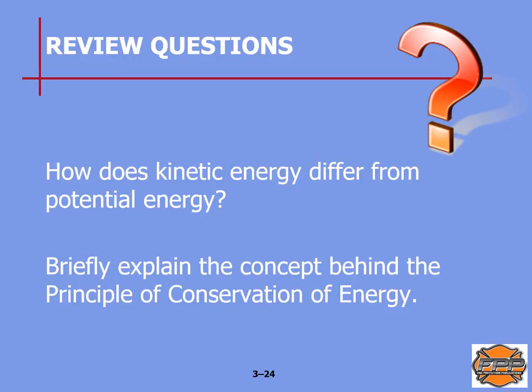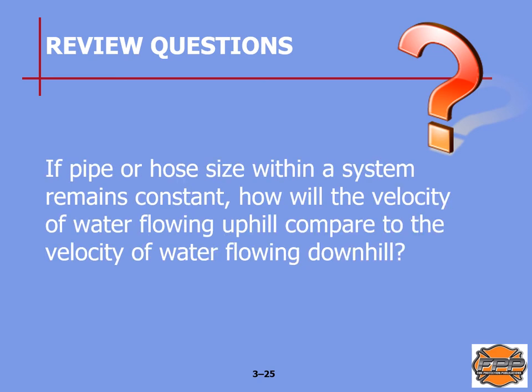Review questions for upcoming quizzes and tests: First, how does kinetic energy differ from potential energy? See page 25 of the manual. Second, briefly explain the concept behind the principle of conservation of energy — see pages 26–27. Third, if pipe or hose within a system remains constant, how will the velocity of water flowing uphill compare to water flowing downhill? See page 31 in your manual.